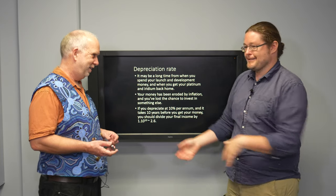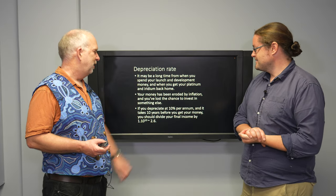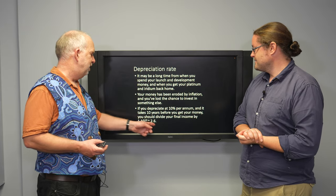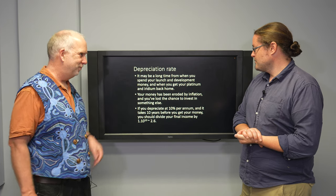Money today is not as worth as five years ago. I mean, if you depreciate it 10% per annum and it takes 10 years before you get your money, that means the final income has to be divided by 1.1 to the power of 10 or about a factor of 2.6.